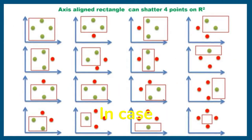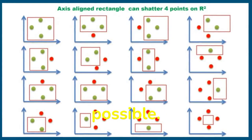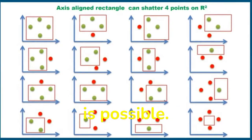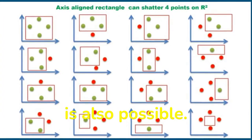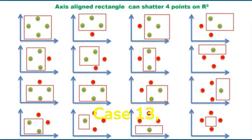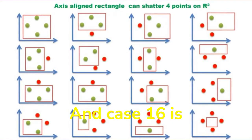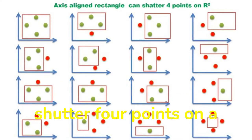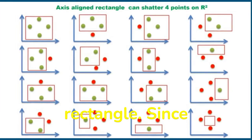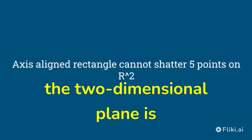Consider four points. There are 16 possible classification cases. All sixteen cases — case one through case sixteen — are possible to classify correctly using an axis-aligned rectangle. Hence, the axis-aligned rectangle can shatter four points on a two-dimensional plane. We cannot find any set of five points that can be shattered by an axis-aligned rectangle. Since four is the maximum number of data points that can be shattered by an axis-aligned rectangle, the VC dimension of the axis-aligned rectangle in the two-dimensional plane is four.